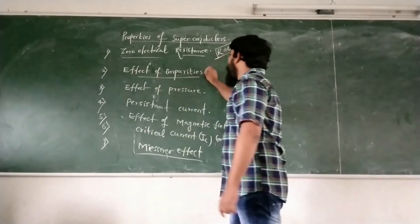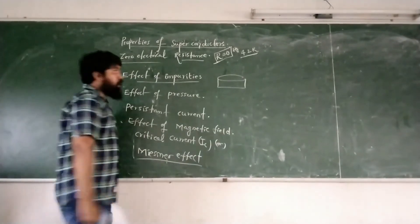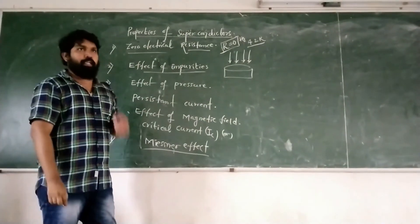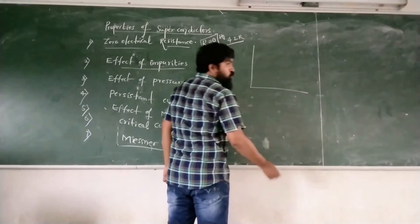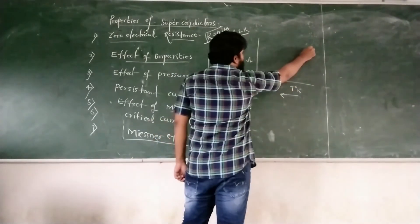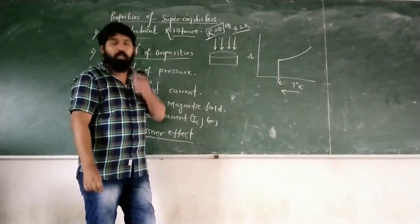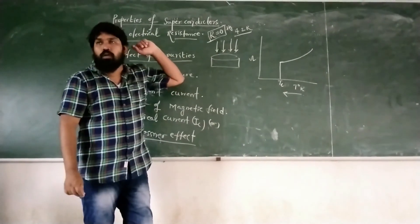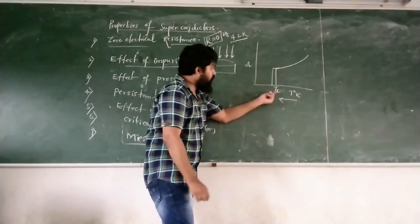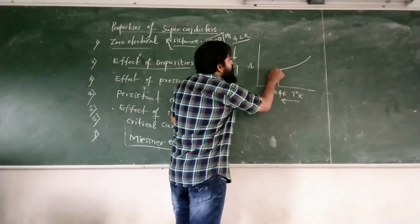What is the effect of impurities? For example, if you have a superconducting material, you can add impurities. If you want to add impurities and adjust the temperature — for example a temperature in the range of 1 K to 4 K — then you can adjust the transition temperature of the superconductor.